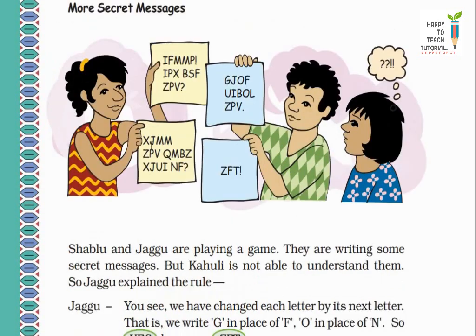Now look here. In place of X, what comes? W. In place of J, I. In place of M, L. Again in place of M, L. W-I-L-L, that means 'Will'. Z, P, V in place we already recorded. Y, O, U. Then in place of Q we will write what? Q's previous is P. M's previous is L. B's is A. And Z's is Y. P-L-A-Y. Again in place of X, W. In place of J, I. In place of U, T. In place of I, H. W-T-H. In place of N, M. And in place of F, E. So the complete message is 'Will you play with me?'